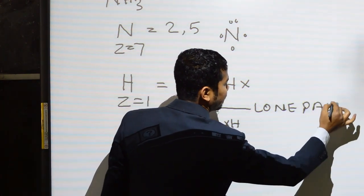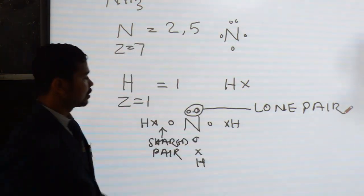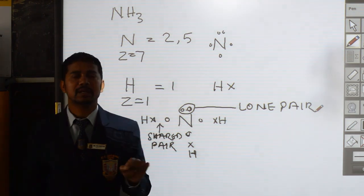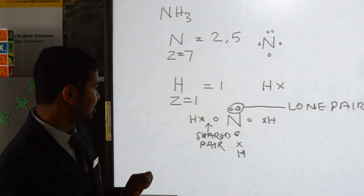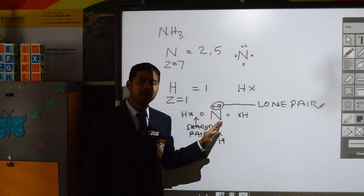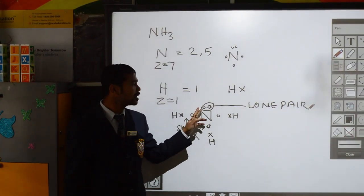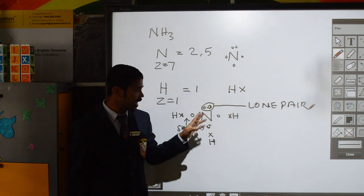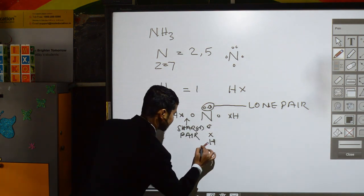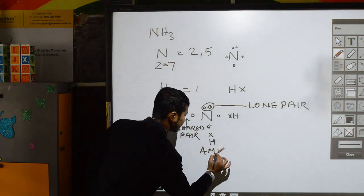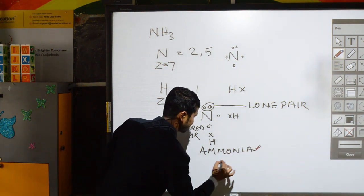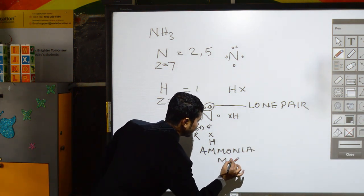This unshared pair of electrons is a lone pair — which is one of the conditions for forming a coordinate bond: an atom with at least one lone pair of electrons. Ammonia has one lone pair of electrons. This is the ammonia molecule.